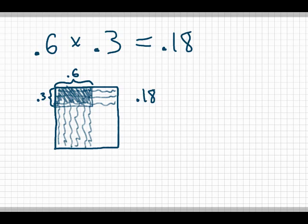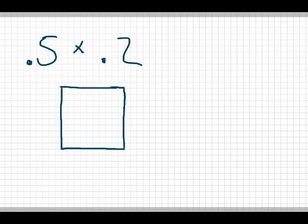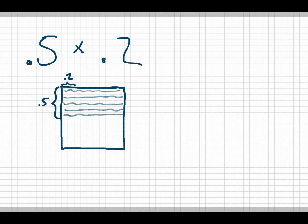Let's do another decimal times a decimal. We're going to do 0.5, or 5 tenths, times 0.2, or 2 tenths. It doesn't matter which you choose on the horizontal or the vertical, as long as you do one on each. This time I'll do the bigger one — 0.5 — with my horizontal rows, and the 2 tenths with my vertical columns. I fill in 5 tenths across, then 2 tenths up and down, and I look at the overlap: 10 hundredths, which is the same as 1 tenth. So 0.5 times 0.2 equals 0.1.